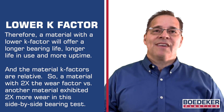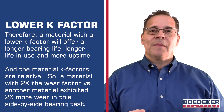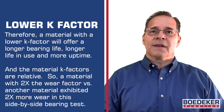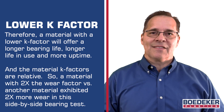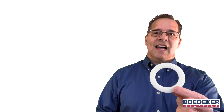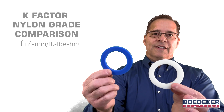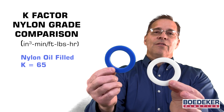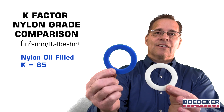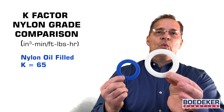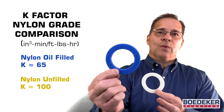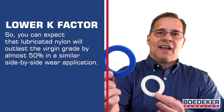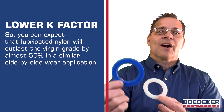The material K factors are relative, so a material with two times the wear factor versus another material exhibited two times more wear in this side-by-side bearing test. As an example, let's look at the wear factor for an unfilled nylon versus an oil-filled nylon. The self-lubricated oil-filled nylon has a K factor of 65 versus 100 for the unfilled nylon. So you can expect the lubricated nylon will outlast the virgin grade by almost 50 percent in a similar side-by-side wear application.